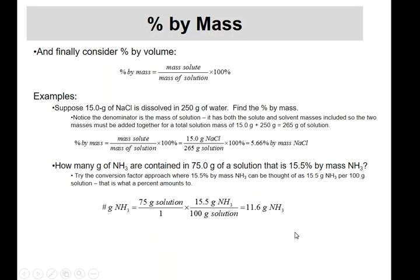Percent by mass is not remarkably different — instead of volume, it uses mass. It's mass of solute divided by mass of solution, times 100%. Suppose 15 grams of sodium chloride is in 250 grams of water — be careful: the bottom is mass of solution, so add them together: 265 grams total. Then 15 divided by 265 times 100 equals 5.66% by mass.